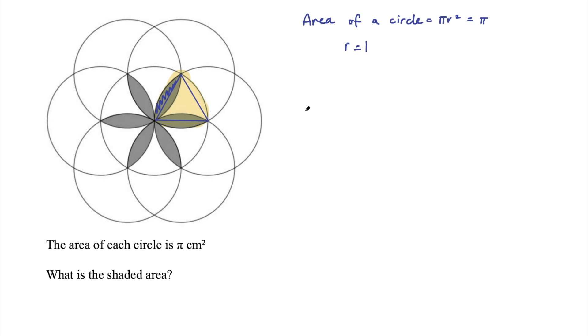Then we want to figure out the area of that equilateral triangle in blue. The area of an equilateral triangle is given by this formula: (√3/4)a², where a is the side of the triangle.